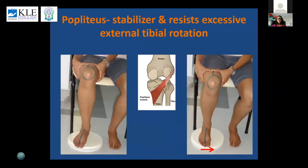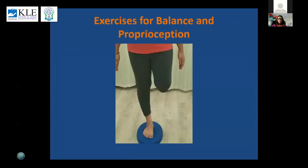We often see a compensatory lateral rotation of the tibia when there is internal rotation of the femur. In her case that was not present, but as a preventive measure, we activated the popliteus — a small but very important knee stabilizer. With her foot on a rotating disc and the femur held stable, we asked her to do internal rotation exercises of the tibia to activate the popliteus. We also taught her balance and proprioception exercises.